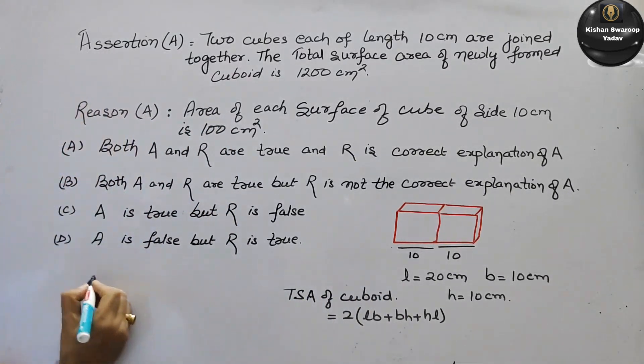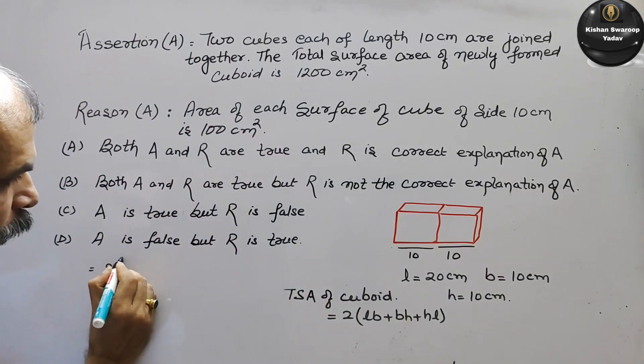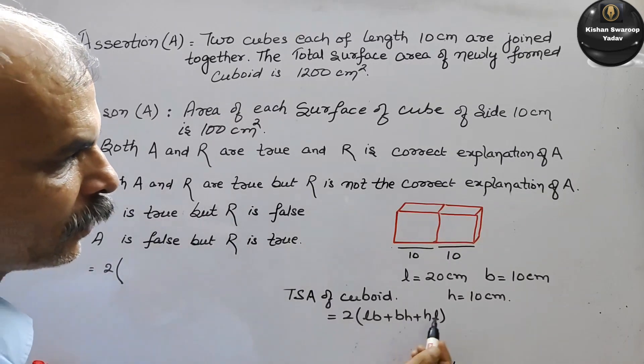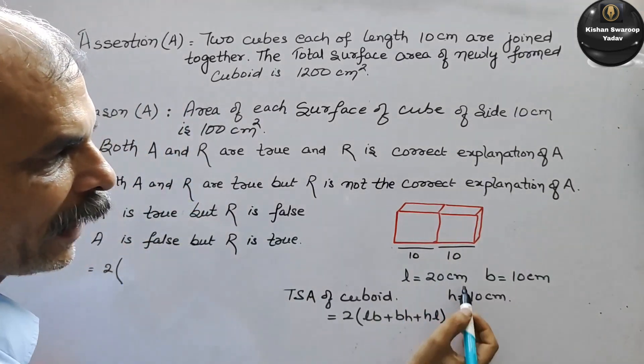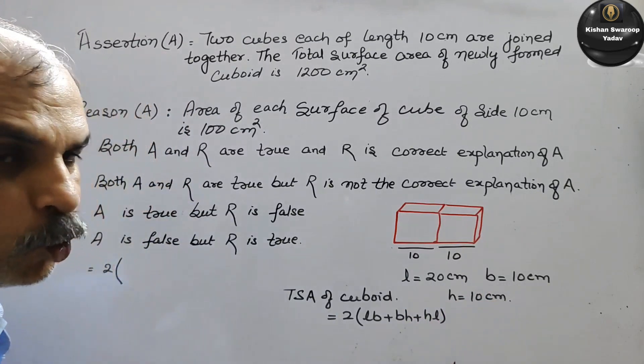So it will be 2 into LB, so 20 into 10. LB is 20 into 10 which is 200.